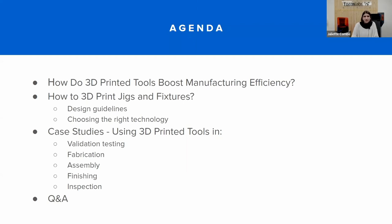So the agenda for today: I will start with setting some context and discuss how 3D printed tools boost manufacturing efficiency. Then I will give a method and guidelines on how to 3D print jigs and fixtures, with design guidelines and how to choose the right technology. Then we'll go into case studies from users using 3D printed tools for different processes — testing, fabrication such as machining, assembly, finishing, and inspection.